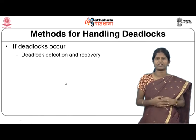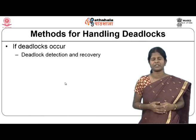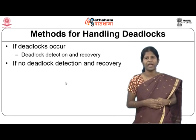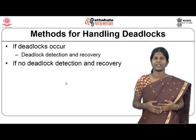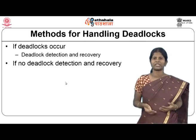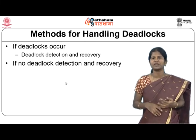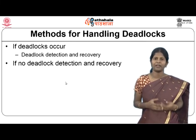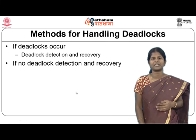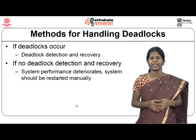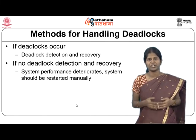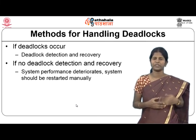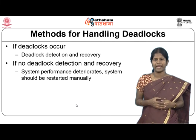If deadlocks are allowed to occur, you need deadlock detection and recovery mechanisms. Without prevention, avoidance, or detection, deadlocks will occur and the system will become very slow. If system performance deteriorates severely, the system must be restarted manually. These are the different methods for handling deadlocks.